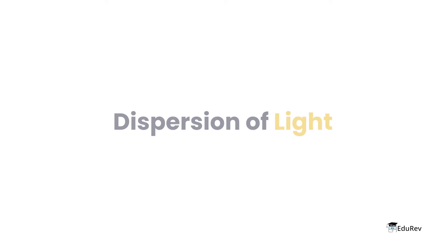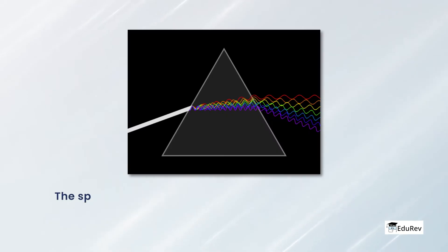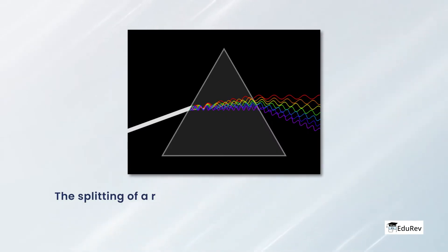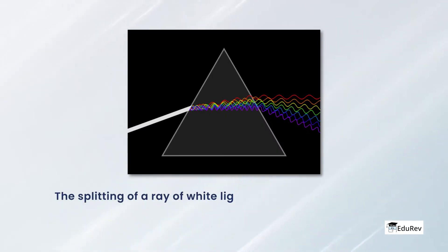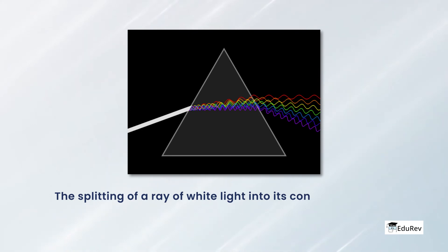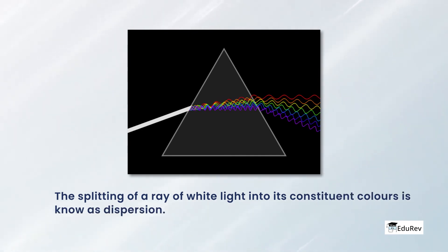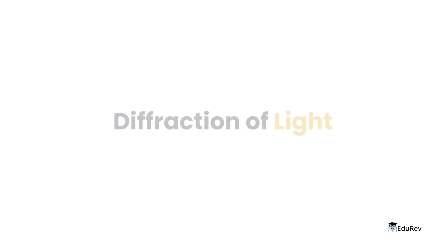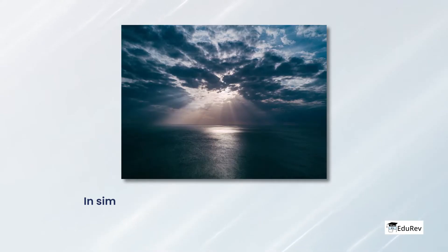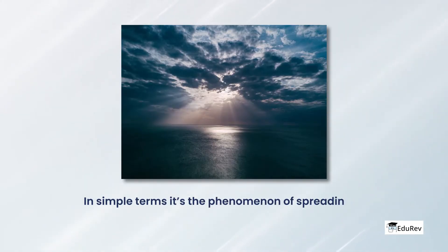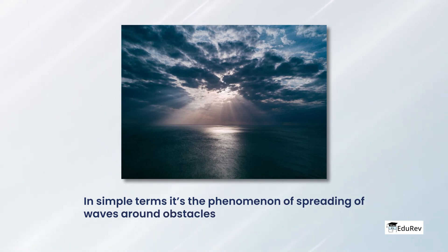Dispersion of light: the splitting of a ray of white light into its constituent colours is known as dispersion. Let's move to diffraction of light. In simple terms, it's the phenomenon of spreading of waves around obstacles.